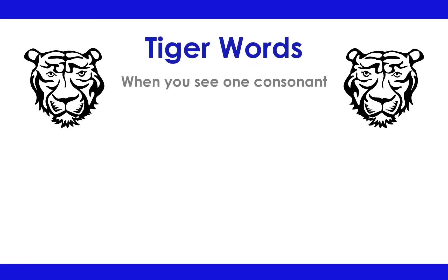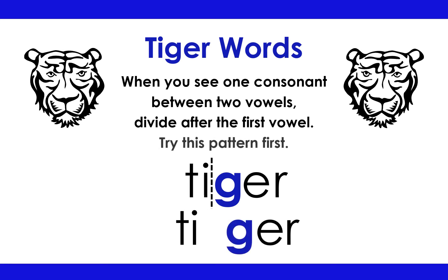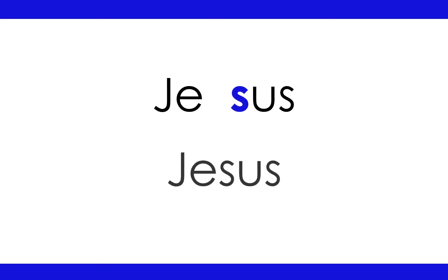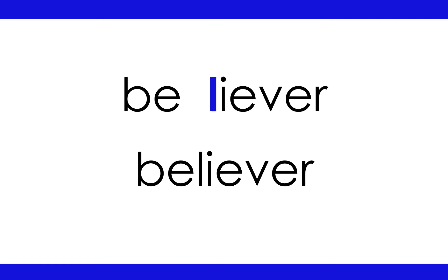Tiger words. When you see one consonant between two vowels, divide after the first vowel. Try this pattern first. Tiger: T-I-G-R. Practice words: Jesus. Judas. Believer. Over.